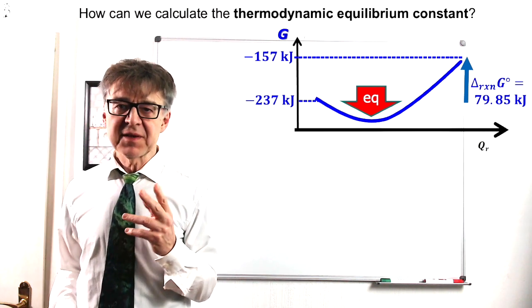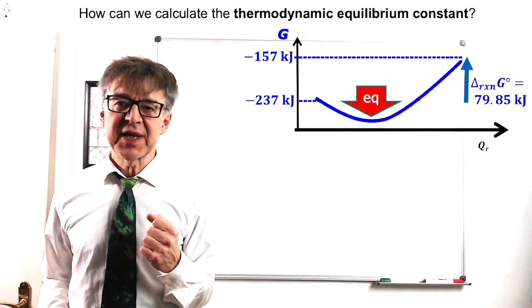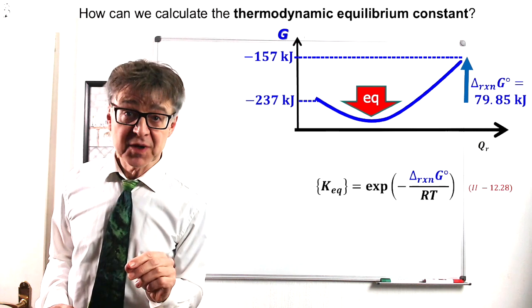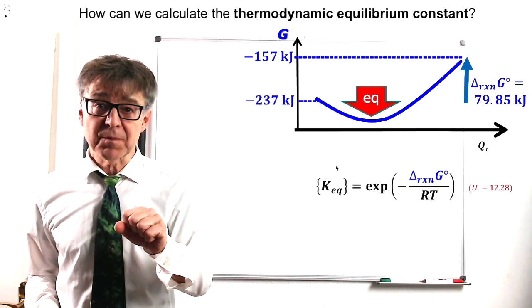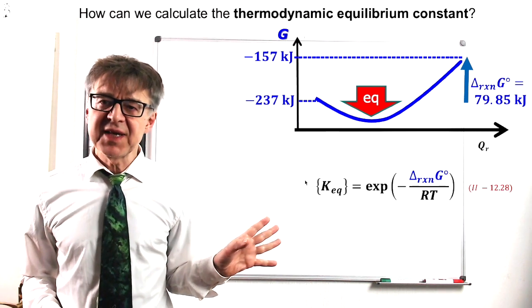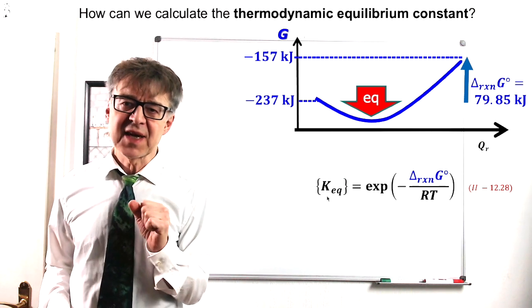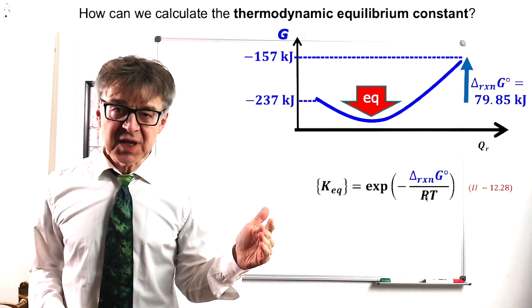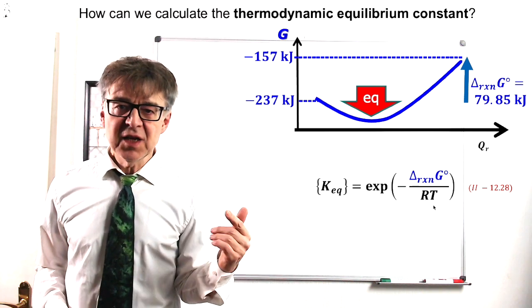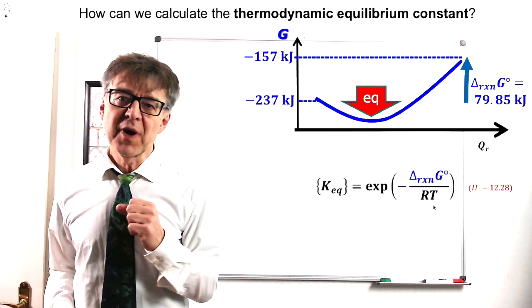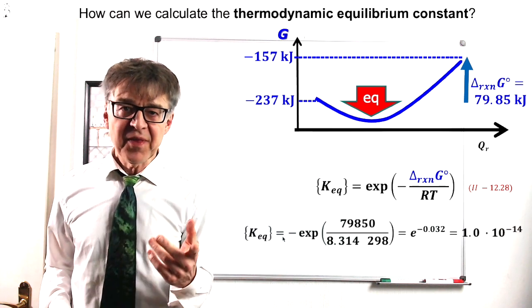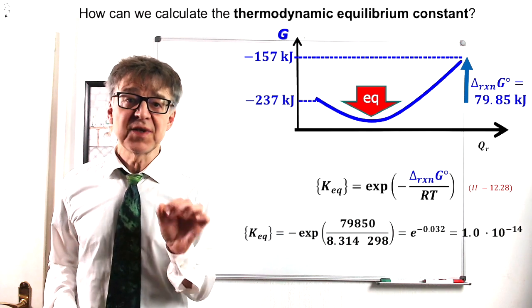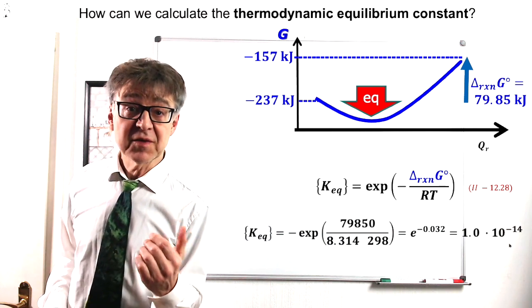H plus and OH minus are about 80 kilojoules less stable than water. From the standard affinity delta G0 we can indeed calculate the numerical value of the equilibrium constant using this equation. The curly bracket means numerical value of K sub EQ. K sub EQ equals E to the delta G0 over RT. We plug in the numbers for autoprotolysis and get a numerical value of 10 to the negative 14 for K.